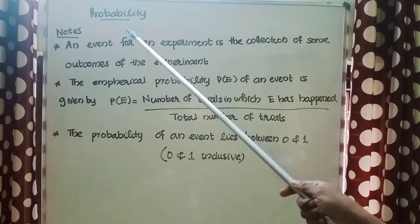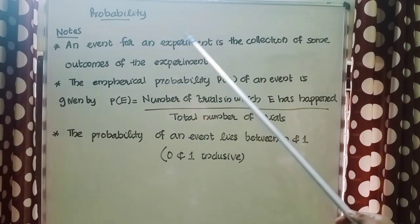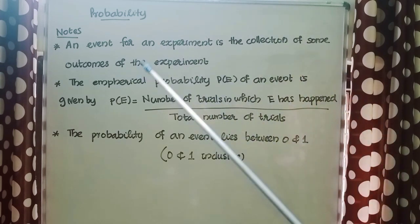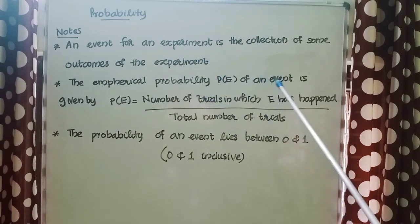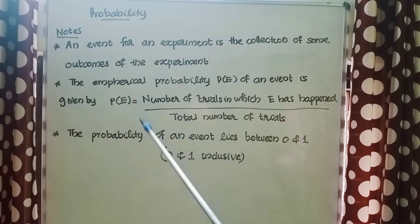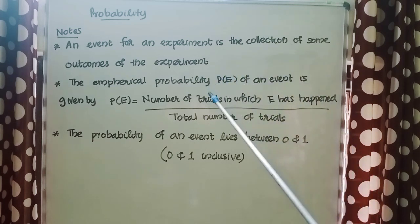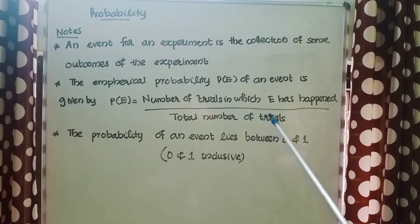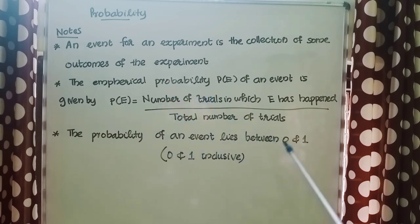In this video we are going to discuss about event and probability of an event. An event for an experiment is the collection of some outcomes of the experiment. The empirical probability P(E) of an event is given by P(E) = number of trials in which E has happened divided by total number of trials. The probability of an event lies between 0 and 1, inclusive — the minimum probability is 0 and the maximum is 1.